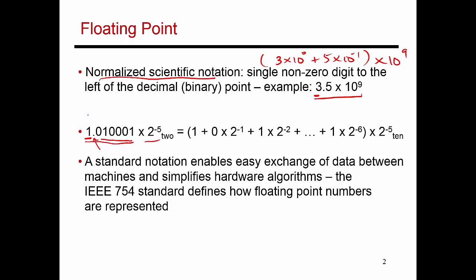So this represents a value of 1 times 2 to the power 0, which is nothing but 1, plus 0 times 2 to the power minus 1, plus 1 times 2 to the power minus 2, then 0 times 2 to the power minus 3, and so on. And then finally, 1 times 2 to the power minus 6. And the summation of all of those terms is then multiplied by 2 to the power minus 5.